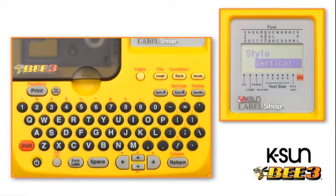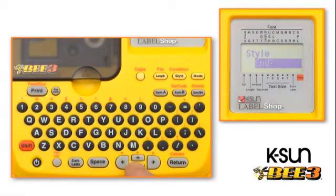STYLE, VERTICAL appears. Press the DOWN ARROW key until STYLE, END is displayed. Press RETURN to end the process.